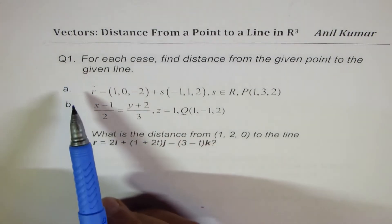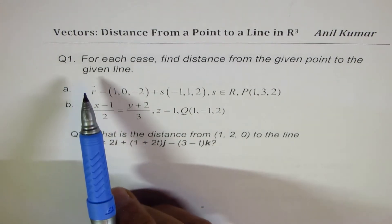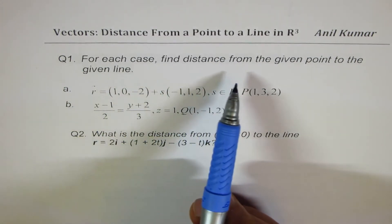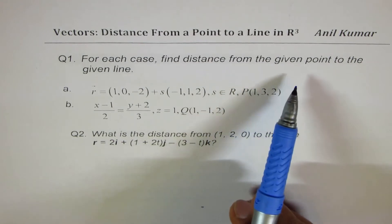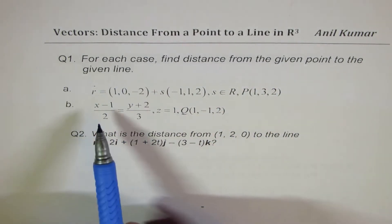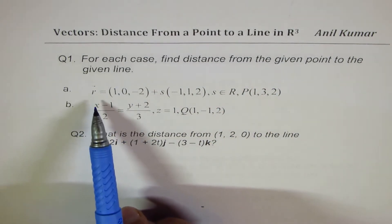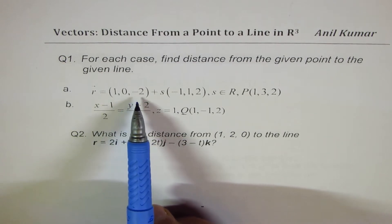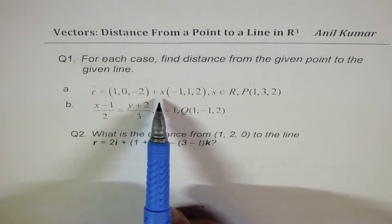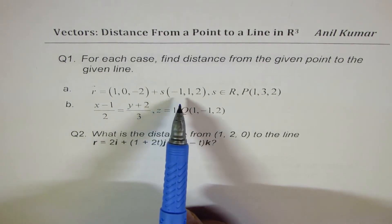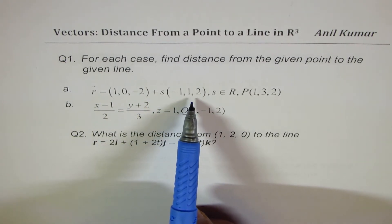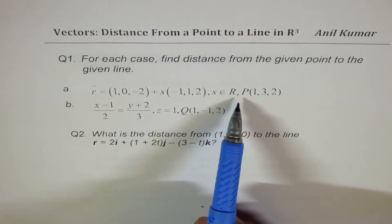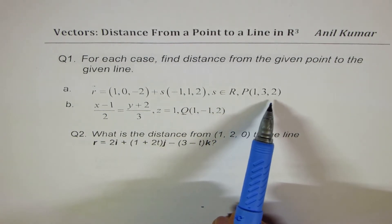Question number one has two parts. For each case, find the distance from the given point to the given line. The line here is R equals to (1, 0, minus 2) plus S times (minus 1, 1, 2), where S belongs to real numbers, and the point is (1, 3, 2).